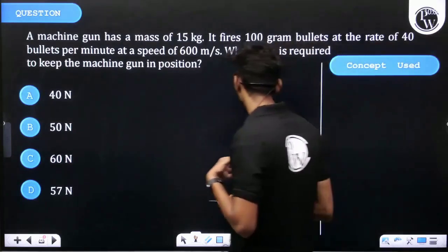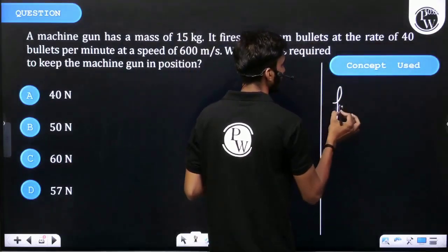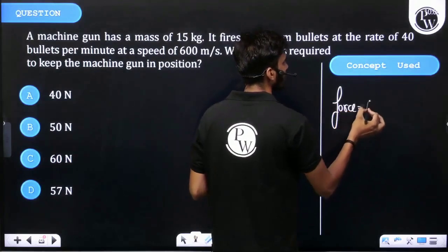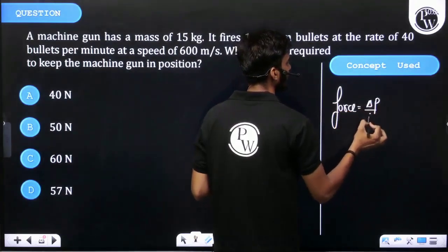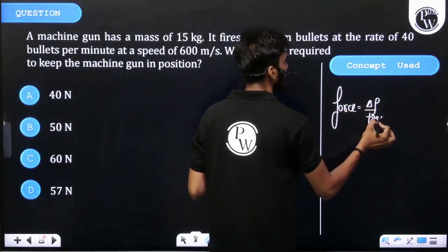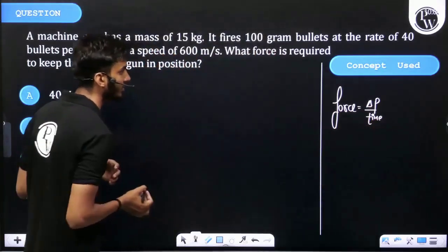The force acting on us we can write as force equals change in momentum upon time. Change in momentum is mass into velocity.